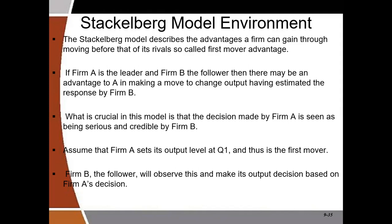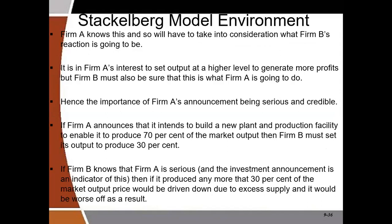The follower always observes the leader's output decisions and makes his own decisions based on that. One key point: in the Stackelberg model, the control variable is quantity — just as in the Cournot model. The leader will set his output thinking about what the follower will do, so he can make output decisions that give him advantage.